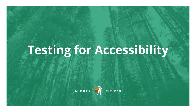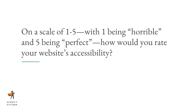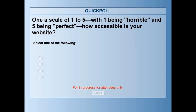Those were some basic accessibility techniques you can start thinking about for your site today. Next, let's talk about how to test for accessibility. We did a quick poll asking attendees to rate their website's accessibility on a scale of one to five — it looks like most people are right in the middle around three, with a few at one and a few at five.